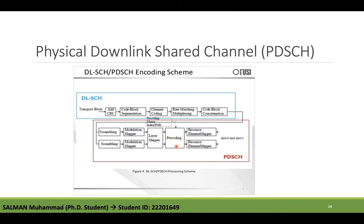The precoding stage takes data from the layers and maps it to the transmit antennas. For transmit diversity, precoding is transparent. For spatial multiplexing, precoding depends on whether antenna ports with cell-specific reference signals or UE-specific reference signals are used. The precoder output is given to the Resource Element Mapper, which maps complex modulation symbols onto resource elements to create the grid for transmission.